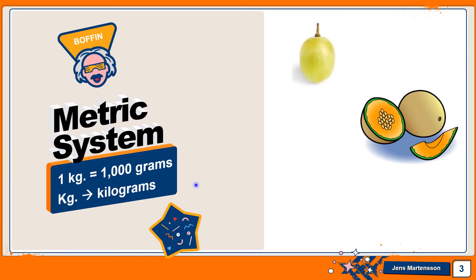So let's think about the metric system. The metric system is a way of measuring mass in objects. So one kilogram is equal to a thousand grams. So that's like saying one gram is like a paperclip. So if you had a thousand paperclips, you would have one kilogram of paperclips.